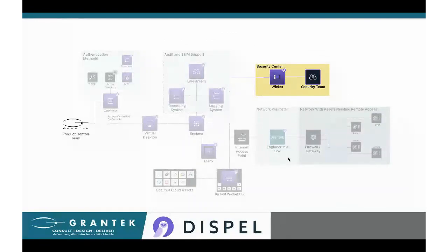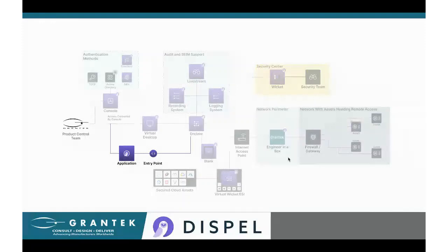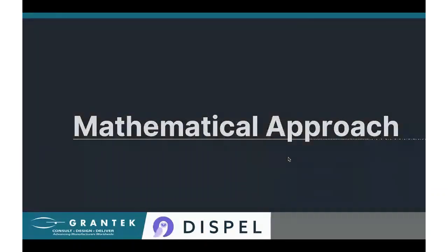People access the system through a web-based console using whatever authentication methods the customer desires. The part that cybersecurity really cares about is knowing what happened and when — tying in recording systems, logging systems, and the ability to watch over the proverbial shoulder of the person accessing an asset to see if they're making a mistake. All of that ties back to both security teams and OT teams. There is also a solution for tablet-based systems that are trusted devices on your network — those can access the system even faster through an application, getting you to your OT system in about three seconds. The question then becomes: how do you assess this in comparison to any other remote access system?